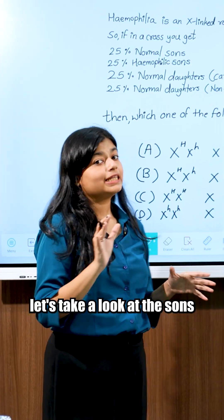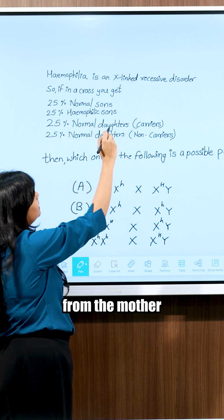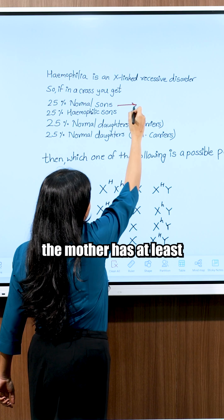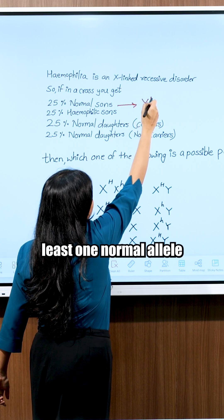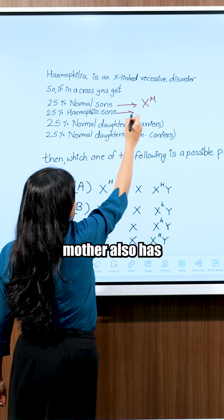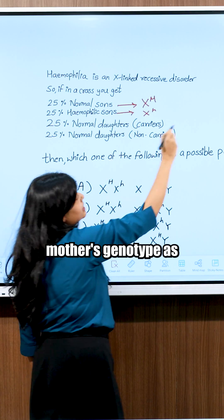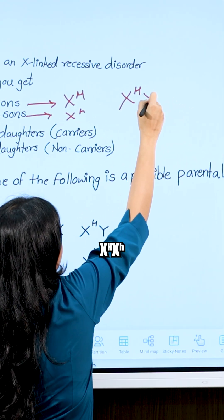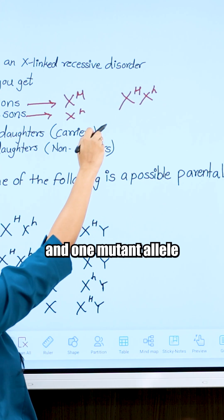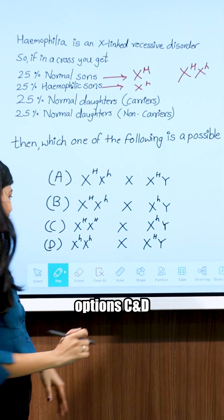Step one, let's take a look at the sons. Since sons get their X-chromosome from the mother, 25% normal sons means the mother has at least one normal allele. And 25% haemophilic sons means the mother also has one mutant allele. So we get the mother's genotype as X-H-X-h, that is one normal and one mutant allele. So she is a carrier. We can easily eliminate options C and D.